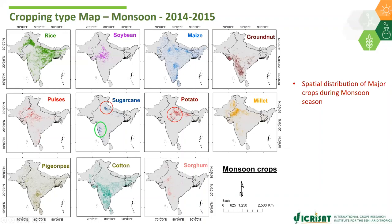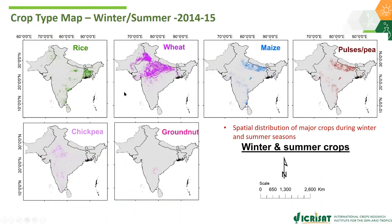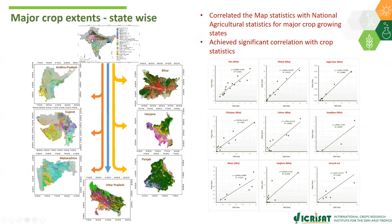For crops with limited ground data, we used similar spectral signatures along with national statistics and secondary data. We mapped out results for 2014–15 and are doing continuous time series as well, covering winter and summer seasons for six major crops including rice, wheat, maize, and chickpea. State-wise crop distribution was compared with national statistics, with R-squared values showing some variation — around plus or minus 40 percent across geographies.